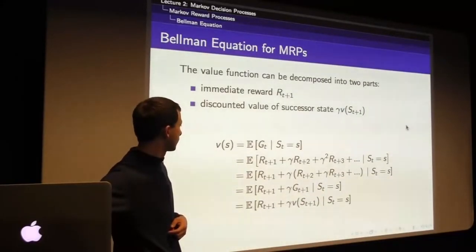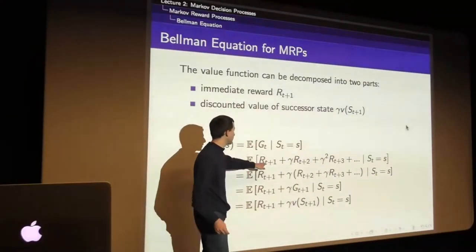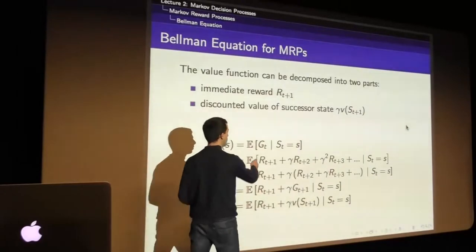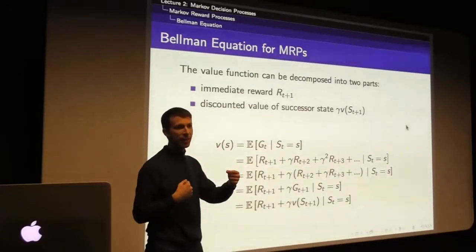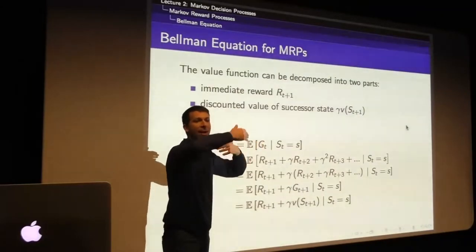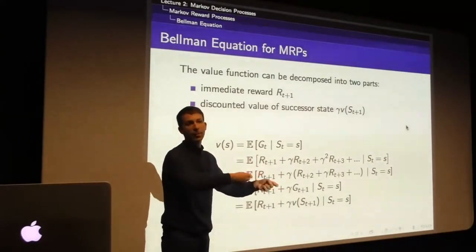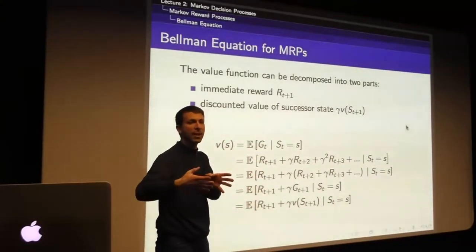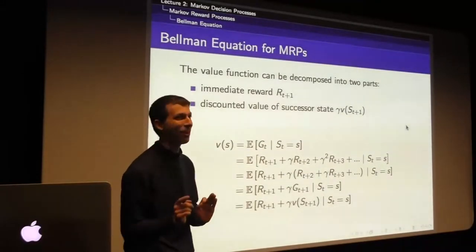Question about indexing: why index the reward at time T+1? We follow the Sutton-Barto convention which indexes rewards at time step T+1 rather than T. This comes from how we think of the boundary between agent and environment - the action goes into the environment, a time step happens, then control passes back to the agent at the new time step. Everything received from the environment gets a new time index T+1. It's just a convention - re-indexing with R_T instead of R_{T+1} doesn't change any math or semantics.